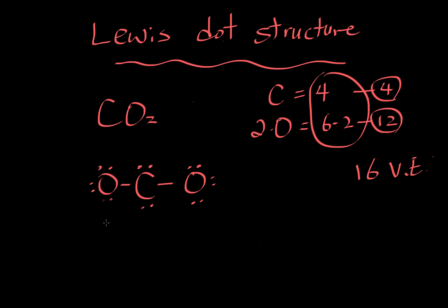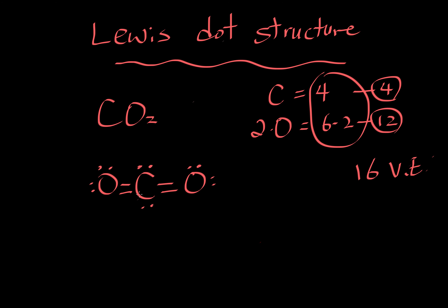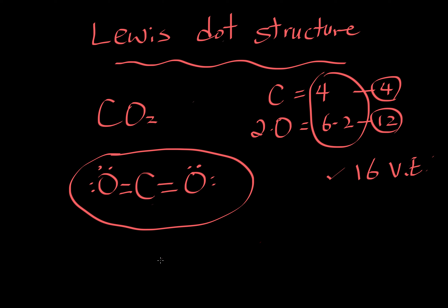So how do we get rid of the extra electrons? Let's reduce the number of electrons around oxygen and form double bonds. We also have to erase the electrons on carbon — because if we don't, carbon ends up with 12 electrons, and we cannot have more than eight. After erasing those two electrons, let's count total electrons used: two, four, six, eight, ten, twelve, fourteen, sixteen — correct, 16 total. Checking the octet rule: left oxygen has two, four, six, eight — happy. Carbon has two, four, six, eight — happy. Right oxygen has two, four, six, eight — everyone's happy. This is the correct Lewis dot structure for carbon dioxide.